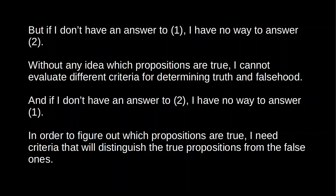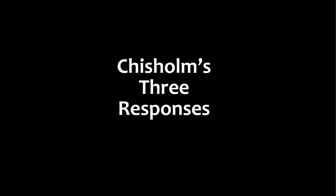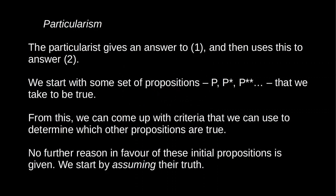This problem has a very long history, but it was reintroduced into contemporary philosophy by Roderick Chisholm. Chisholm says that there are three responses to this problem, but unfortunately each of these responses begs the question against the other. Let's look at the three responses. First of all, there is particularism. The particularist assumes an answer to the first question and then uses it to answer the second. The particularist starts with some set of propositions that she takes to be true — P1, P2, P3, etc. — and no further reason for their truth can be given.